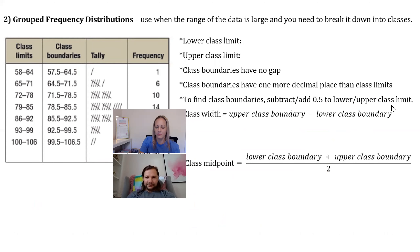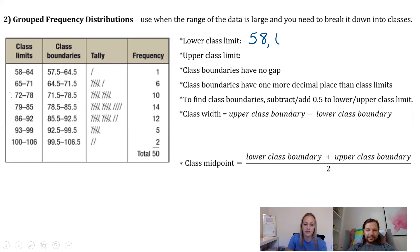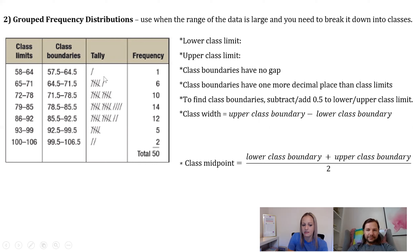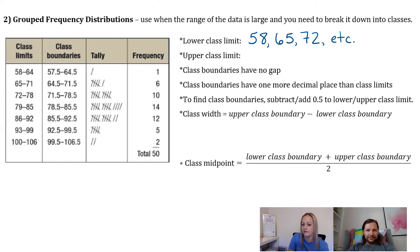Before the numerical examples, the first type is called a grouped frequency distribution. You use this when your data is numerical and the range is pretty large — you break it into classes with a lower bound and upper bound. The lower class limit is the smaller number in each class, for example 58, 65, 72, etc. The upper class limit is the larger number: 64, 71, 78, 85, and so on.